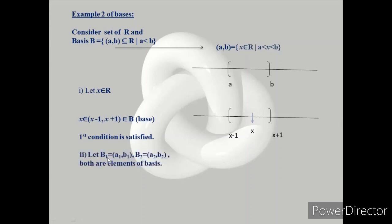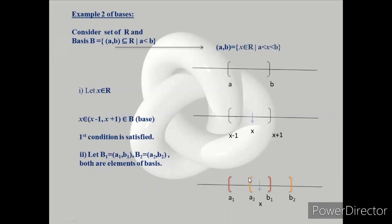Second condition: let B1 and B2 be two elements of the basis. If their intersection exists, then the intersection is the interval (a2, b1). So B3 = (a2, b1), meaning there is a basis element contained in the intersection containing x. Second condition is satisfied.